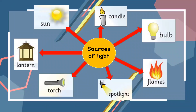Sunlight is a natural source of light. Sources of light include: the sun, candle, bulb, flames, spotlight, torch, and lantern.